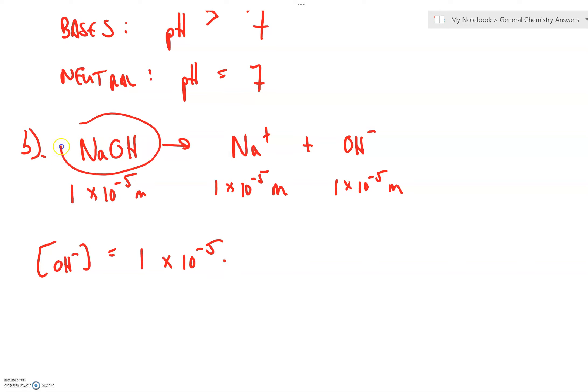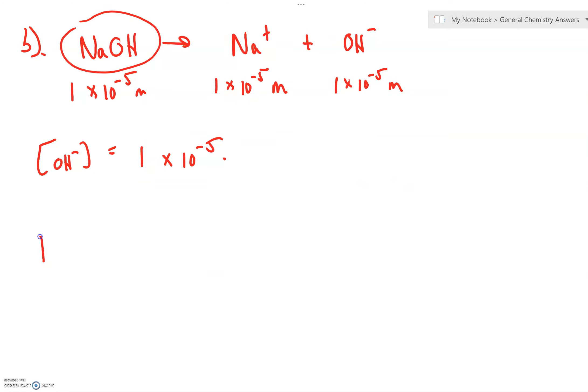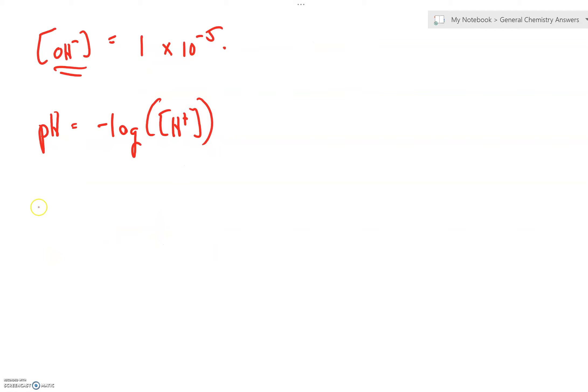We know this, 1 times 10 to the negative 5th molar. And clearly, this has to be a base that contains hydroxide. So, if I was going to ask you to find the pH, well, we've got a slight snag because pH is equal to negative log of H+. Well, this isn't an acid. It isn't producing H+. It's a base. It's producing OH-. How do we do this? Well, you remember from the first part on calculating OH- and H+, that H+ is equal to Kw divided by hydroxide. Kw is a constant, always equals 1 times 10 to the negative 14th.